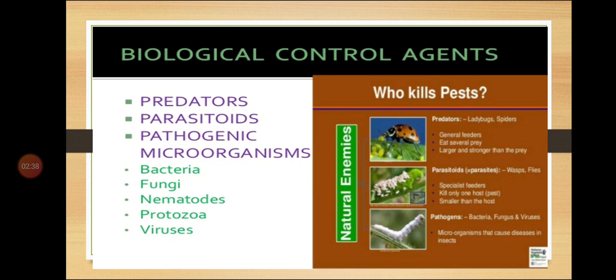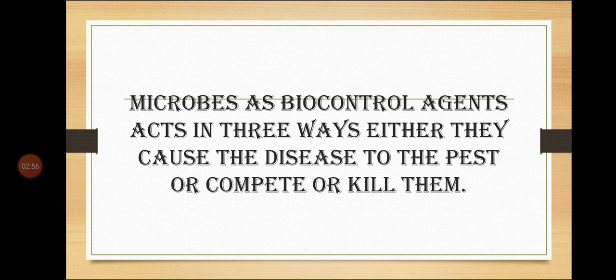Microbes are one among the biocontrol agents. These microbes include predators, parasites, and pathogenic microorganisms such as bacteria, fungi, virus, protozoans, nematodes, etc. All of these are used as microbiological control agents that kill the pest. Microbes as biocontrol agents act in three ways: they either cause disease to the pest, compete with the pest, or kill the pest.